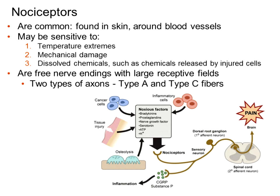These pain receptors respond when physically damaged. They can respond to a variety of chemicals — from cancer cells, inflammatory cells, and damaged tissue — including bradykinins, prostaglandins, nerve growth factors, potassium, and adenosine. These dissolved chemicals trigger receptors on free nerve endings to generate an action potential that heads to the spinal cord and eventually up to the brain.